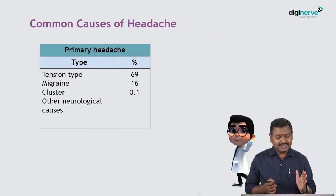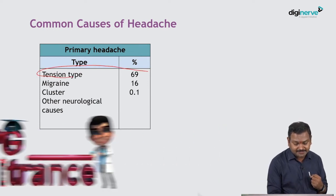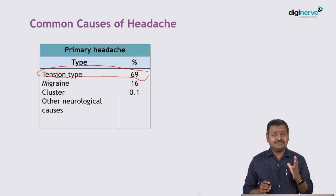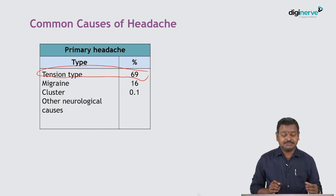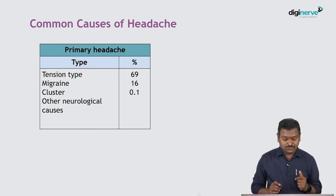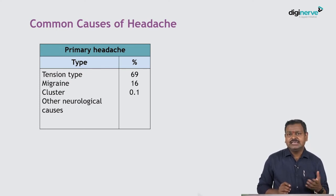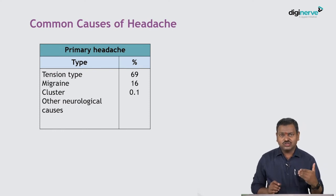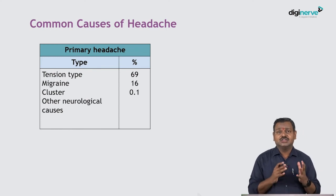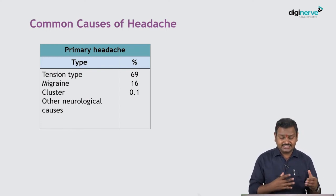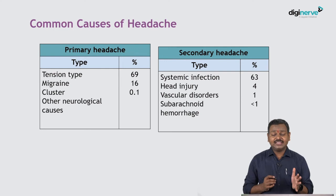The most common type of primary headache is tension-type headache, which accounts for almost 69% of patients. Migraine is the second most common, accounting for 16% of primary headaches. Cluster headache accounts for 0.1%. Other neurological diseases that present with headache as the primary symptom include neuralgias such as trigeminal neuralgia and glossopharyngeal neuralgia.